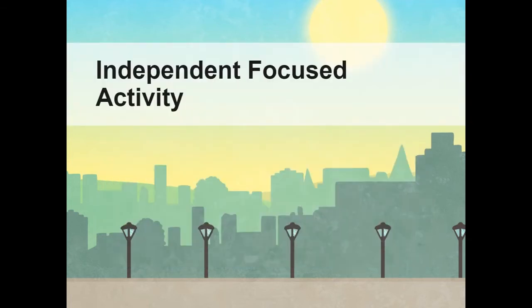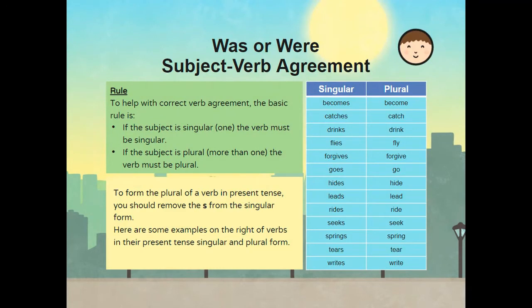Independent focused activity. In this activity, we will focus on was or were subject-verb agreement. The rule: if the subject is singular — if it is one — the verb must be singular. If the subject is plural — if it is more than one — the verb must also be plural. To form the plural of a verb in the present tense, you should remove the s from the singular form. Here are some examples of verbs in the present tense, in singular and plural form.